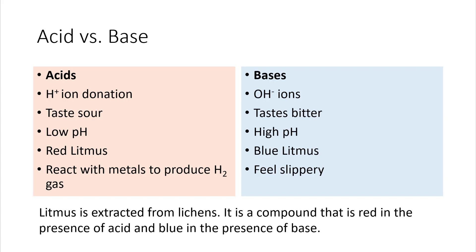Litmus is extracted from lichens. It's a compound that is purple in a neutral solution, red in the presence of acid, and blue in the presence of base. Because the color of litmus is sensitive to the pH of the solution, we call this an acid-base indicator. Unlike red cabbage juice, litmus has only two colors, and the combination between the two — red and blue — is equal to purple.